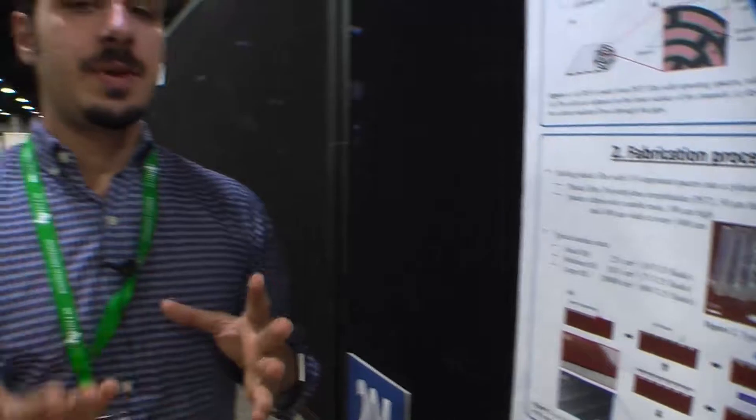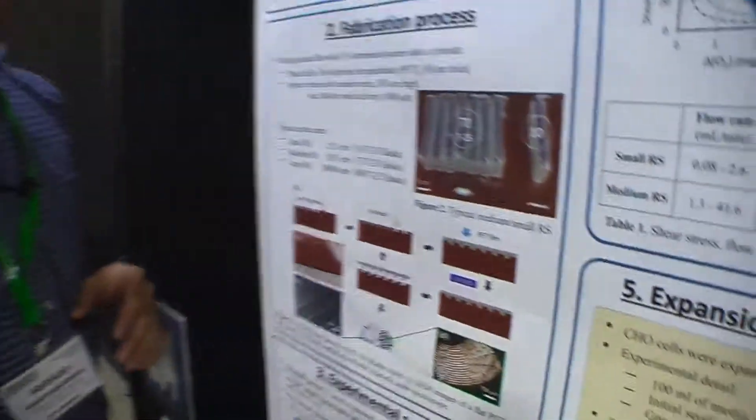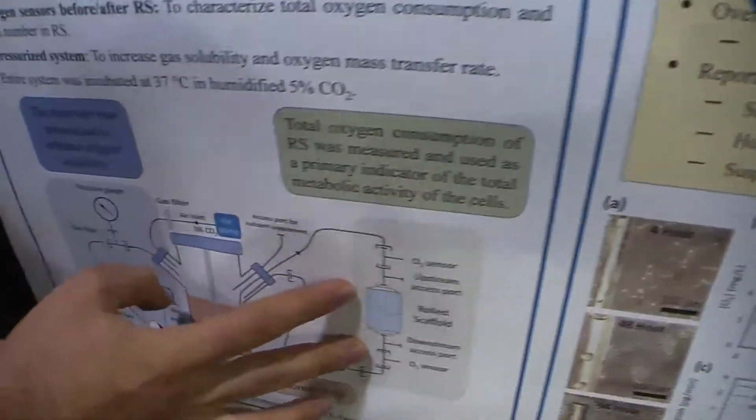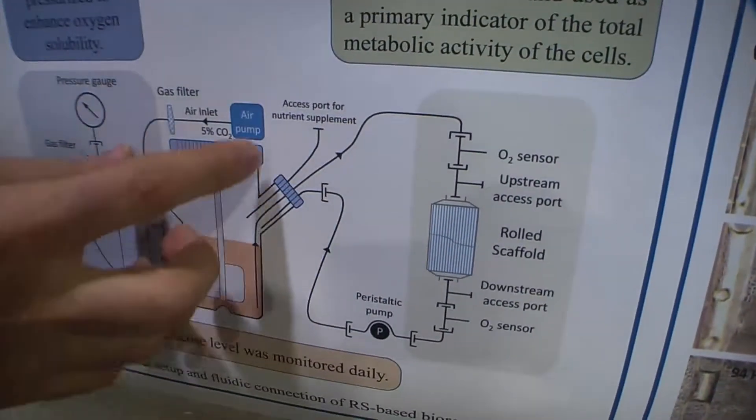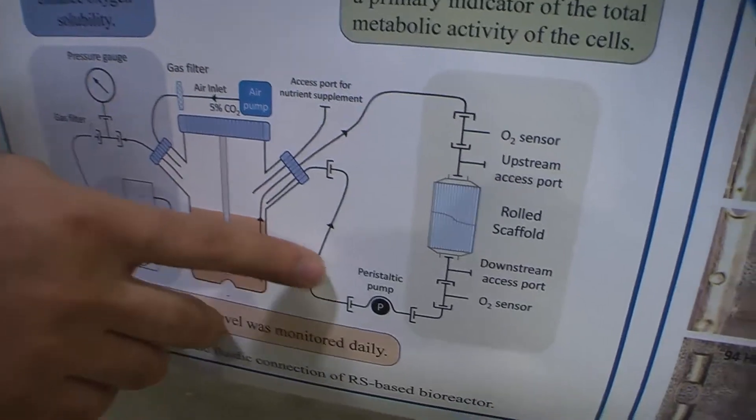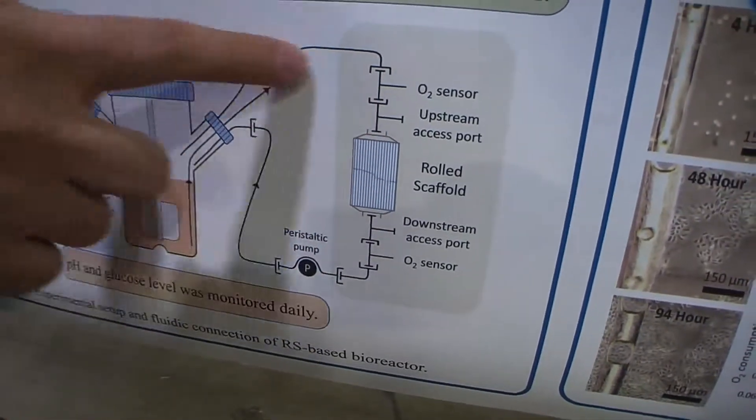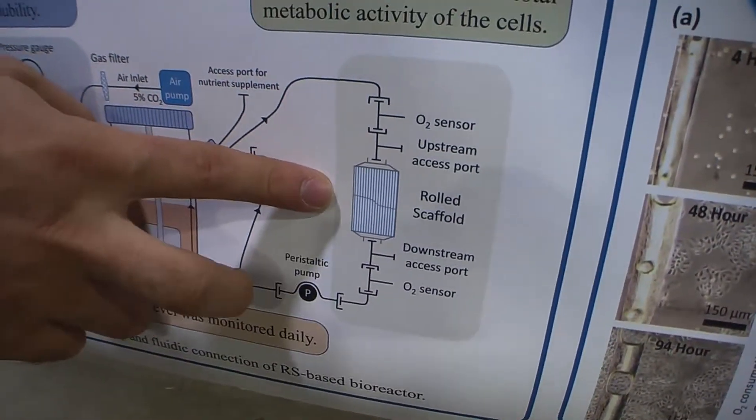The experimental setup is very simple. We have the Roll the Scaffold placed here, and we have flasks with growth media in them. With the help of a peristaltic pump, we circulate the media continuously through the Roll the Scaffold.